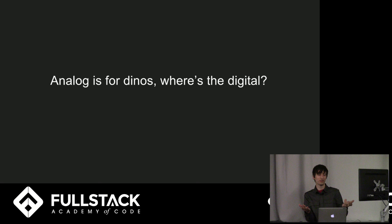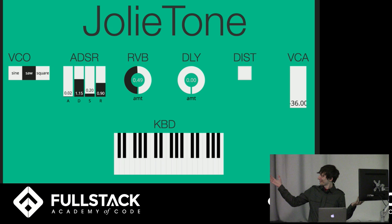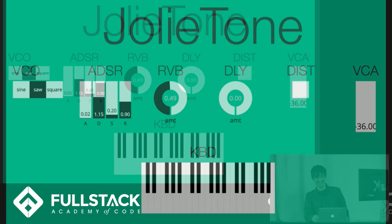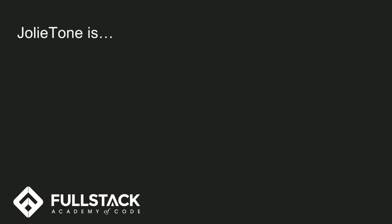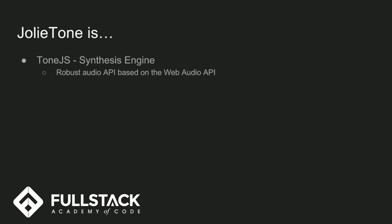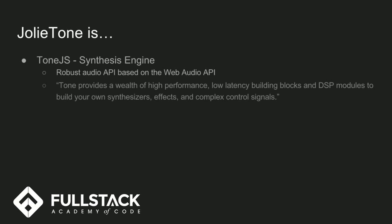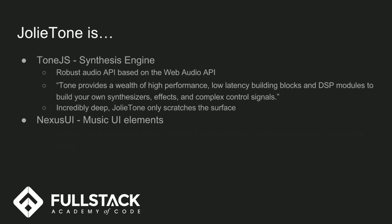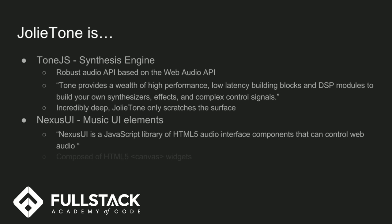I know you're thinking, where's the digital? Here you go — this is the synthesizer I made for you guys. I made it using a cool JavaScript library called Tone.js. It's a really powerful API built on web audio, and it's extremely deep. Tone provides high-performance, low-latency building blocks and DSP so you can build synthesizers, effects, and all kinds of things. You can build songs and sync it together with other devices — it's really insane. For UI elements I found a cool library called Nexus UI, which is a collection of HTML5 interface components built on canvas. It's really easy to drop things into the page and hook them up to Tone.js for widgets.